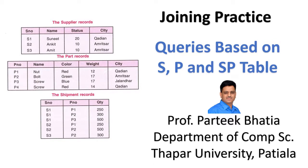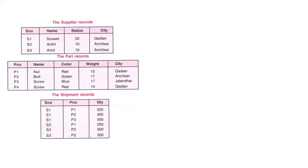In this session we will practice joining operations using the supplier-part database to perform different queries. Through these queries we will learn how to write joining queries involving multiple tables. The supplier-part dataset has three tables: the supplier table S with columns supplier number, name, status, and city; the part table P with part number, name, color, weight, and city; and the shipments table SP with supplier number, part number, and quantity.